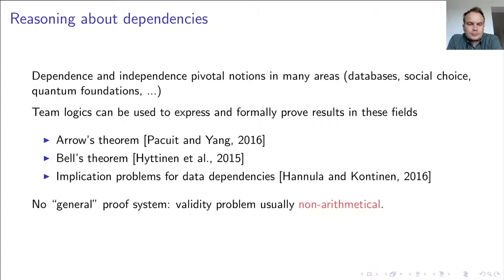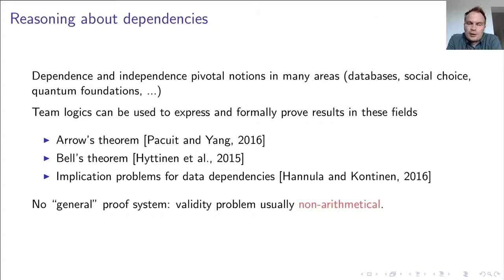However, extending first-order logic with additional dependence features comes with a price: the complexity of the logic becomes very high. For instance, determining whether a given team logic sentence is valid is typically of non-arithmetical complexity. Thus, there cannot be any hope for a full-fledged proof system that is sound and complete for these logics, and instead one has to determine partial solutions to particular reasoning problems.